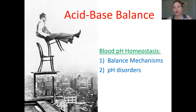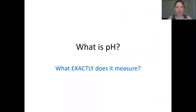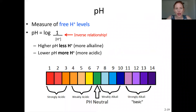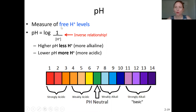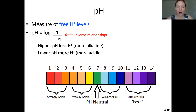Before we get into how you regulate and maintain pH homeostasis, let's talk about what pH is. It's a measurement of free hydrogen ions, also known as protons. Some people see hydrogens in a molecule and think that contributes to it, but once hydrogen is bound into a molecule, it's no longer part of pH. It's only a measurement of those free hydrogen ions — any hydrogens that are part of a molecule are not going to be part of pH.